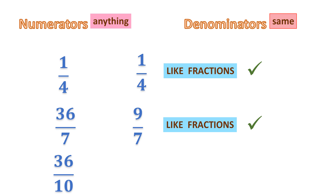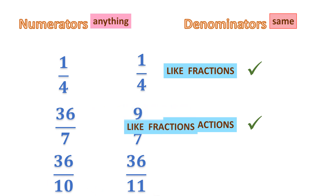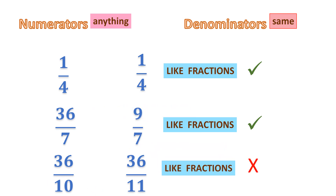Now take another example: 36 over 10 and 36 over 11. Look at this example — the numerator for both is 36, but the denominators are 10 and 11. I said the denominators should be the same, and the numerators can be anything. But here the denominators are not the same — one is 10, another is 11. So, is it a like fraction? No, they are not like fractions.